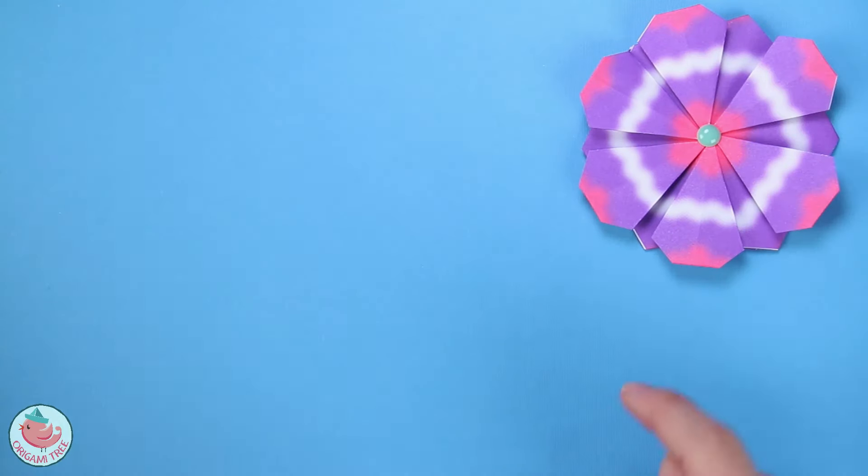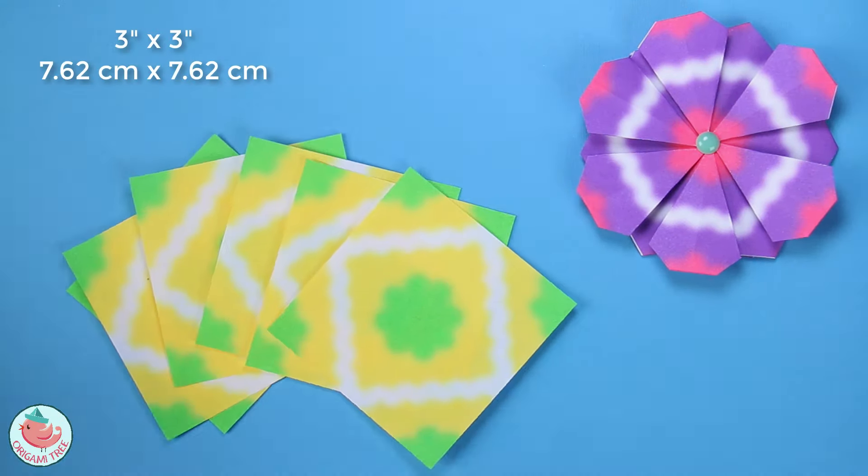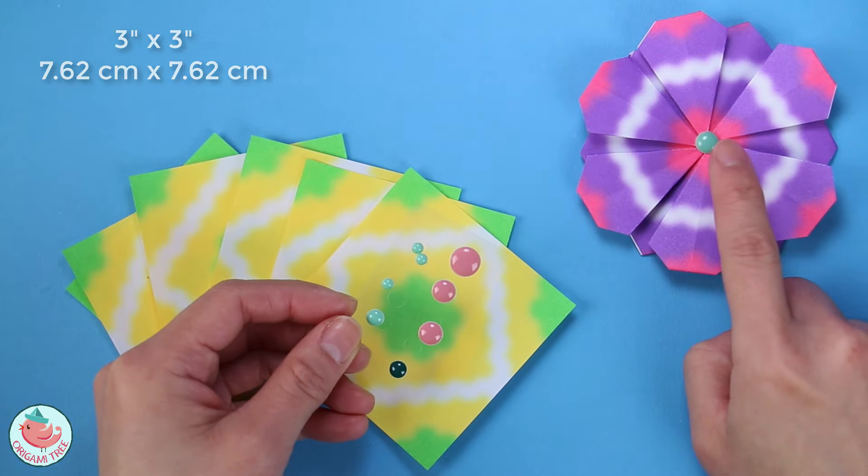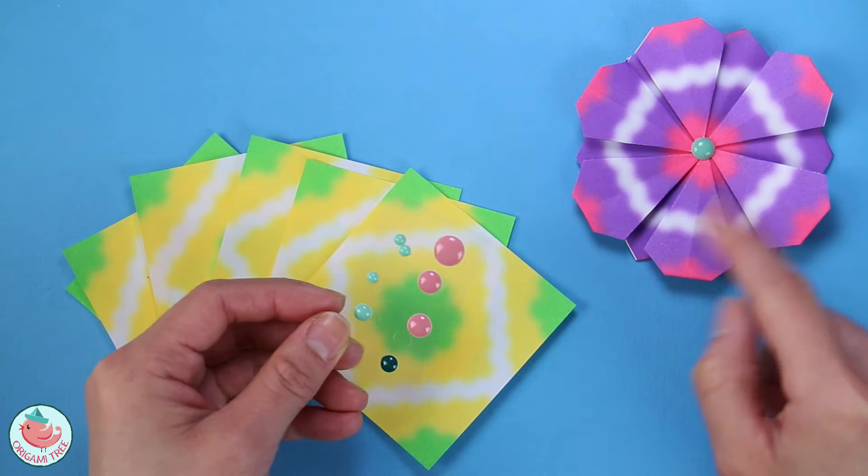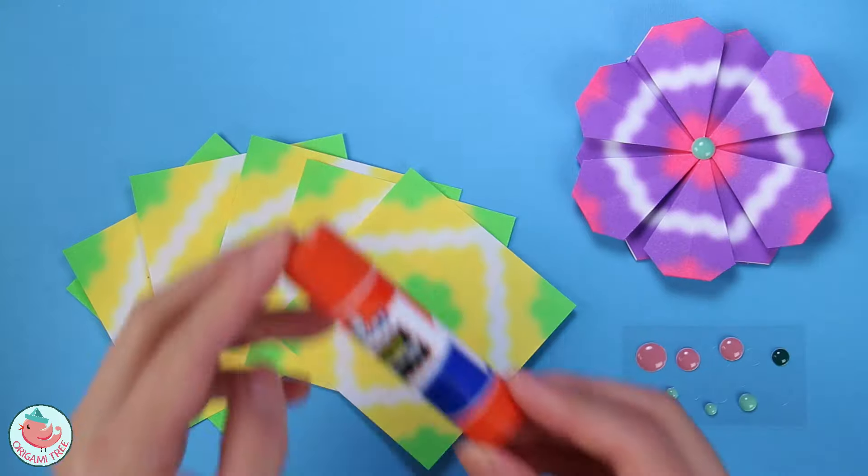To make this gorgeous paper flower you're going to need six sheets of paper, a round sticker to decorate the flower right at the center like I did with this one, or you can even use a button. And you'll need some glue.